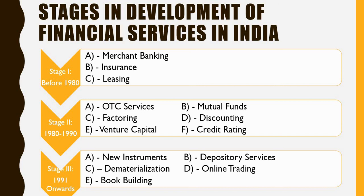Now that you have understood the basics of financial services, let us understand the stages in the development of financial services in India. Stage one — before 1980 — had three major services: merchant banking, insurance, and leasing. Stage two began in 1980, adding OTC (over-the-counter) services, mutual funds, factoring, discounting, venture capital, and credit rating. Stage three — 1991 onwards — goes hand in hand with LPG (Liberalization, Privatization, and Globalization) and introduced new financial instruments, depository services, dematerialization, online trading, and book building.